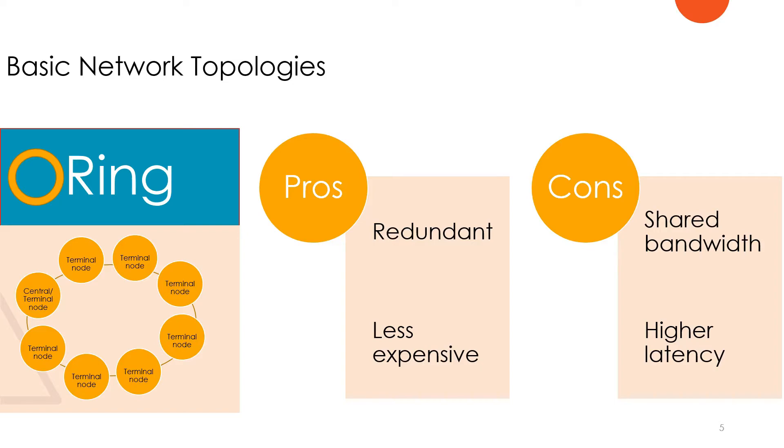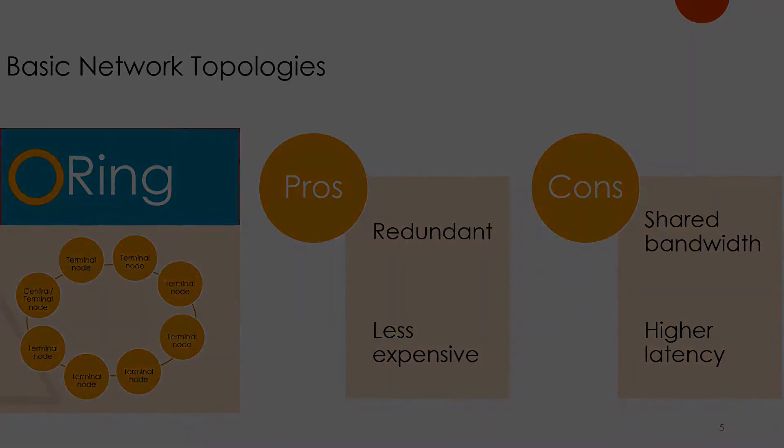The ring topology is by default redundant if it's bidirectional. In case any node or any link fails, the connection can still go through the other direction of the network. It's also less expensive because it requires fewer ports.